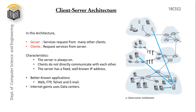In client-server architecture, there are two types of systems: one is the server and the other is the client. The server services requests from many clients, and the client requests services from the server. The server is always on to serve requests; clients cannot directly communicate with each other, and the server has a fixed and well-known IP address. Well-known applications using client-server architecture include Web, FTP for transferring files, Telnet for remote terminal access, and email.